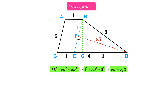Therefore, triangle BDE is an isosceles triangle. According to the property of an isosceles triangle where the angle bisector, median, and altitude are concurrent, we find that DF is the median of BE, meaning BF equals FE. And BE equals AC, which is 2. Hence, BF equals FE, which equals 1.